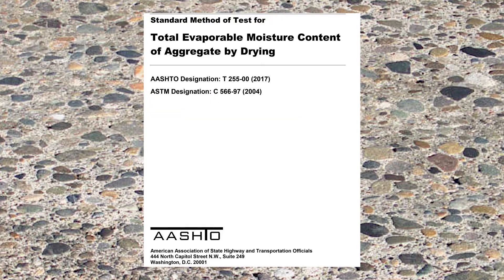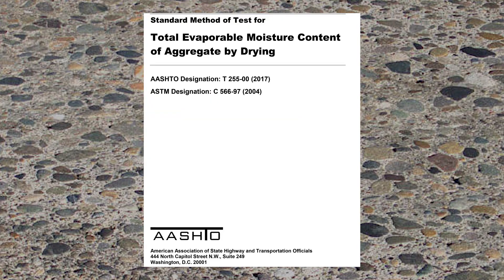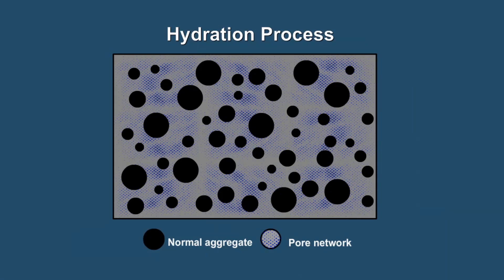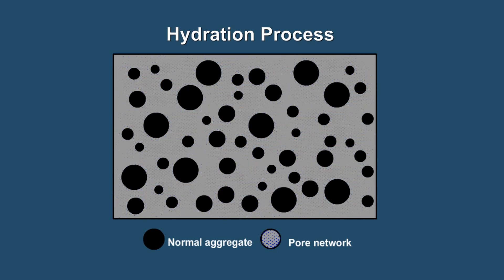Absorption and surface moisture of aggregate are determined using AASHTO T255. As the internal structure of aggregate is made up of solid material and voids that may or may not contain water, the amount of water in the concrete mixture must be adjusted to account for the moisture conditions of the aggregate.